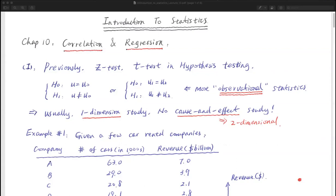For chapter 10, we will study something new, something that is very useful in the industry. In fact, this is the most powerful part of learning statistics. So chapter 10, we will study these two concepts: correlation and regression.